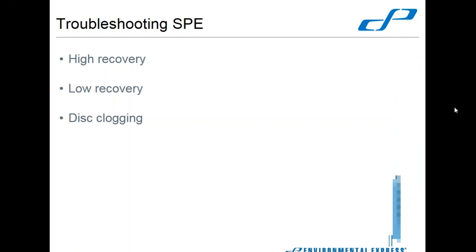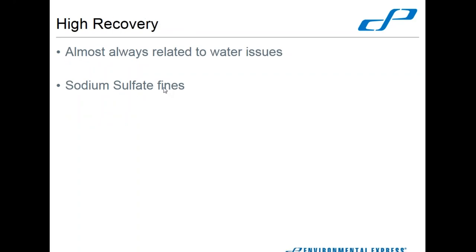We're going to go over to the troubleshooting of solid phase extraction. We've got three basic categories of troubles that come up during solid phase extraction: high recovery of your standard, low recovery of your standard, and disc clogging. I'm going to address them in a slightly different order than what I've got listed.